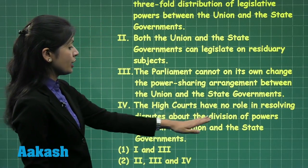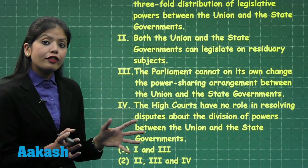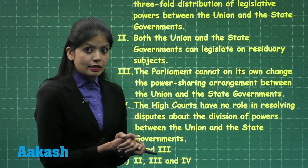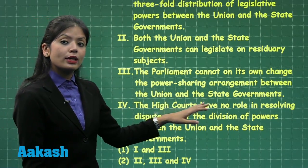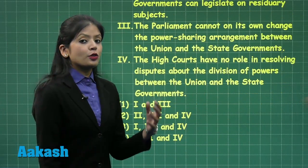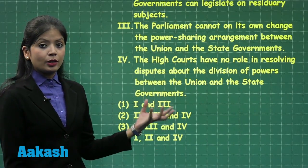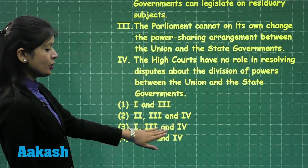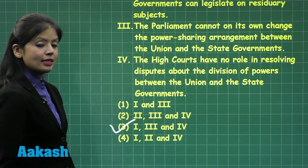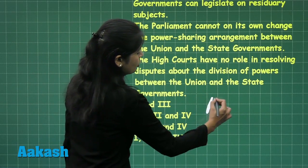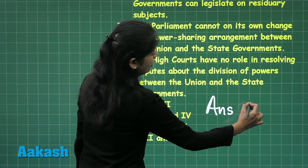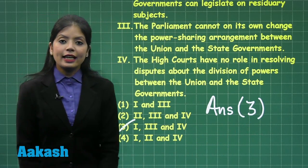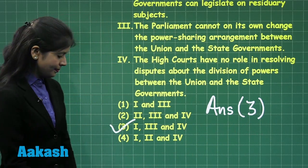Statement four says the high courts have no role in resolving disputes about the division of powers between the union and the state government — this is also correct as part of the fundamental structure of the federal system. So statements one, three, and four are correct. Option three clearly states that these three statements are true, therefore the correct answer is option three.